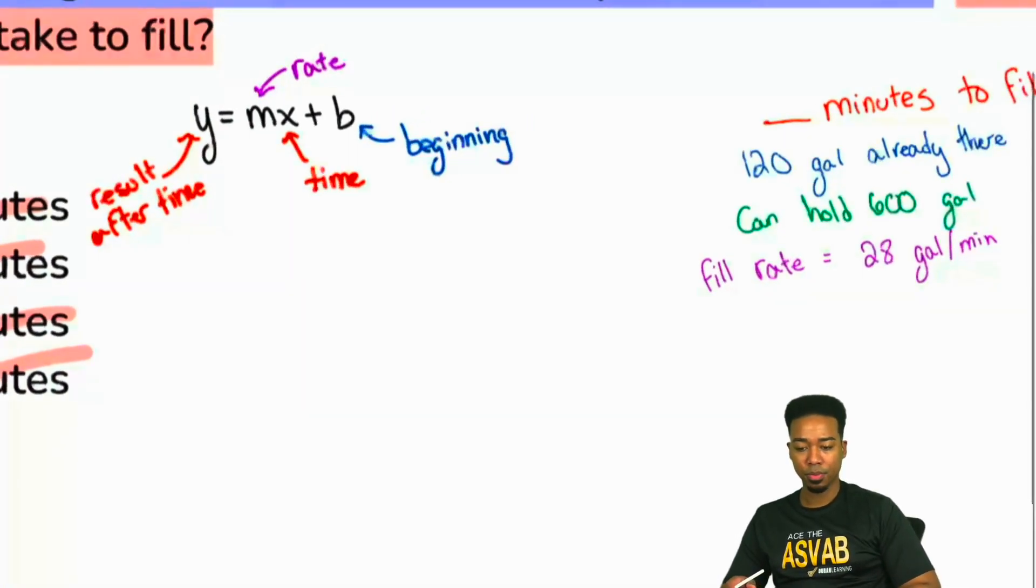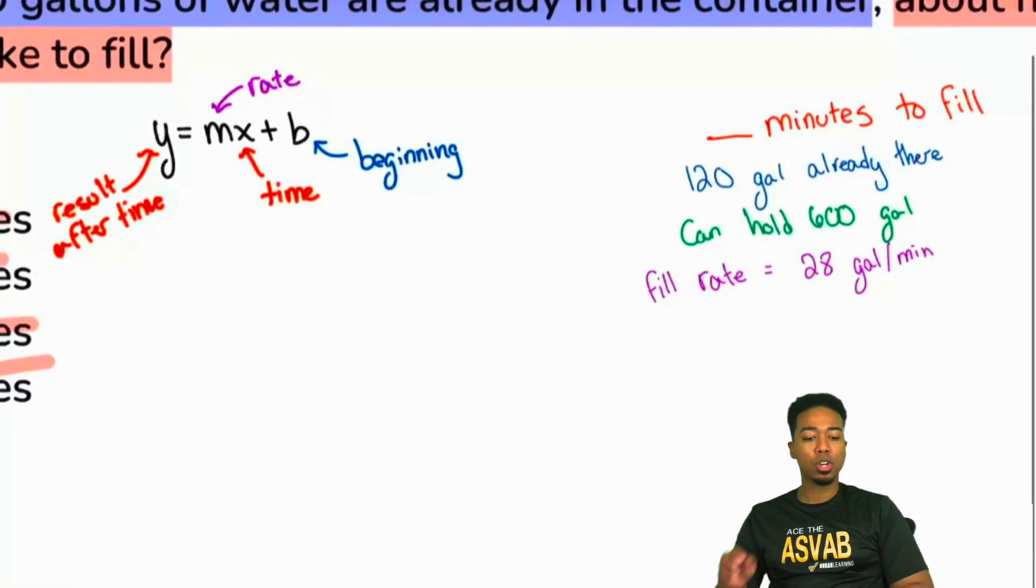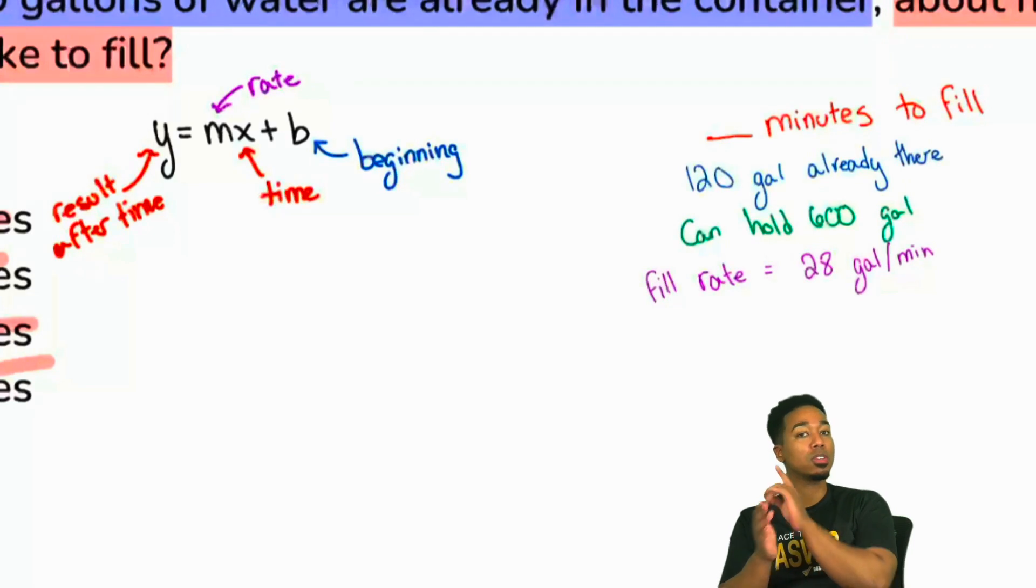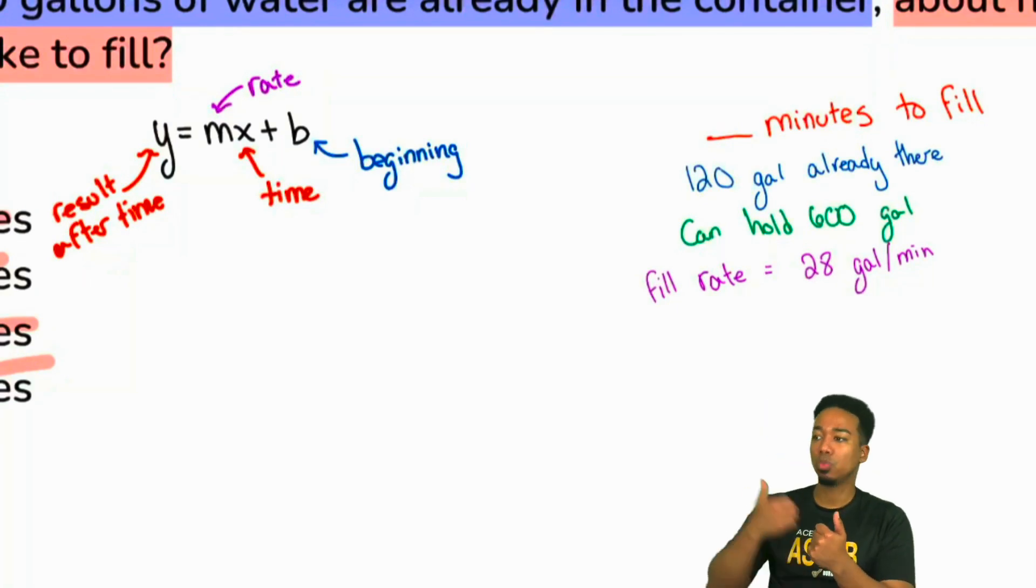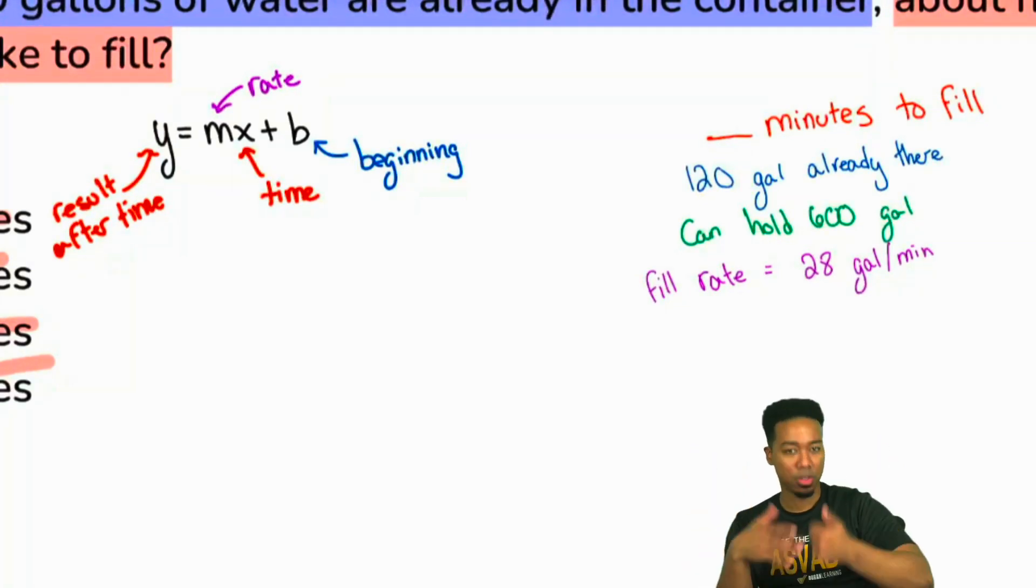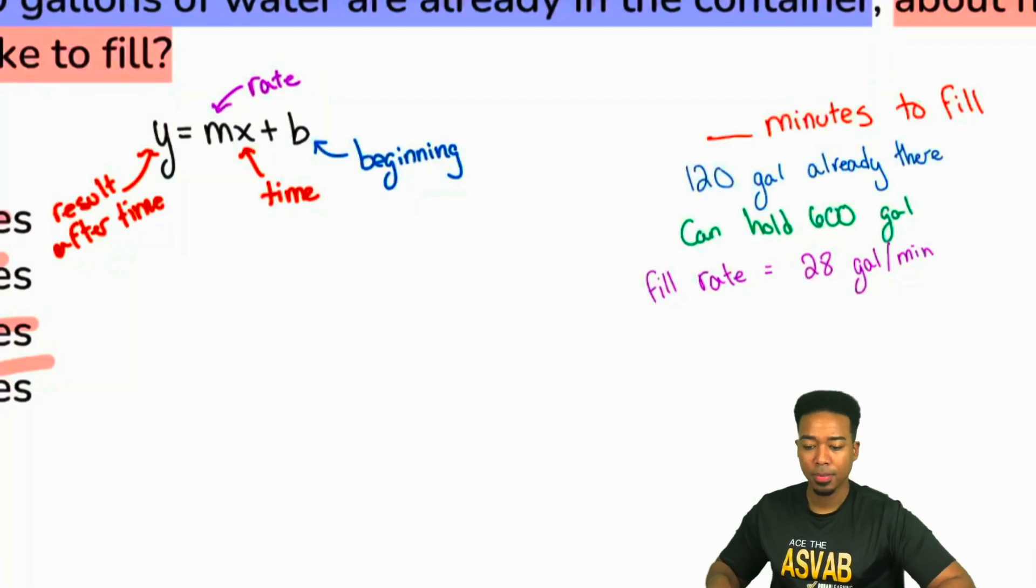And then Y and X, those are going to be essentially the time and the result after that much time. So typically, this is going to be time, and then the Y is going to be the result after time. For those of you who are not too familiar with this, does this make sense? Y equals MX plus B - B is what happened in the beginning, what you already have. M is going to be your rate, and in math knowledge it's going to be slope. But then X and Y, those are connected. X is the time it takes you to get to Y, so X is what you need to go through to get to the Y result.